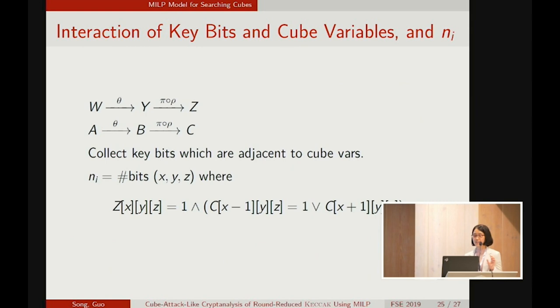Lastly, the interaction of key bits and cube variables. Recall that we use the capital ABC to denote the activeness of the state. And w to denote whether the initial state contains key information or not. Accordingly, we also introduce y and z. With the z and c, we can now collect the key bits that are adjacent to cube variables.